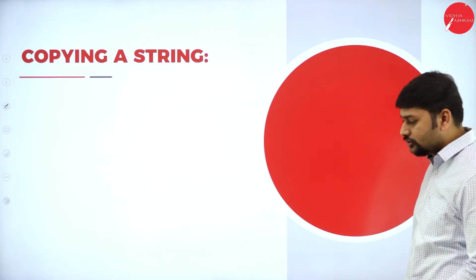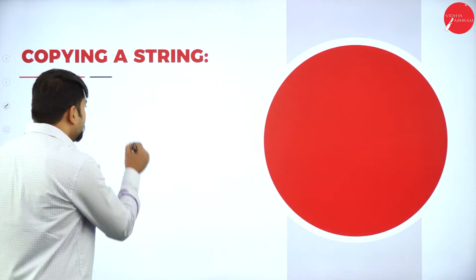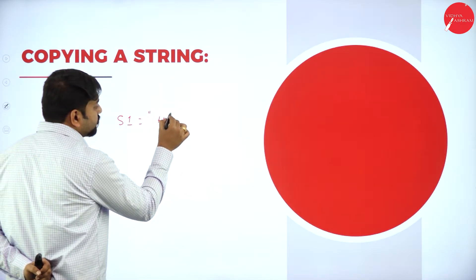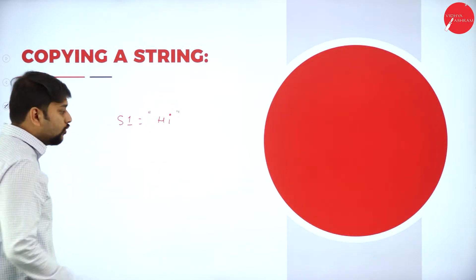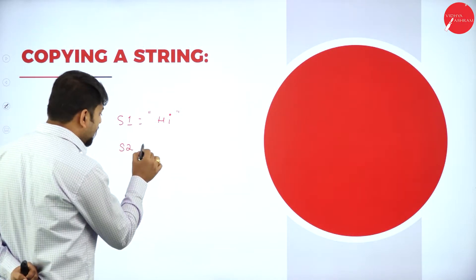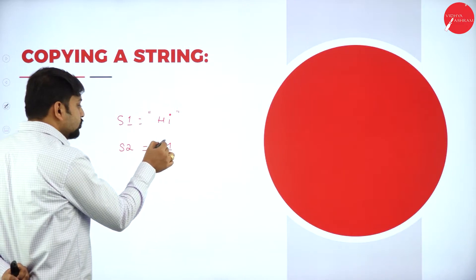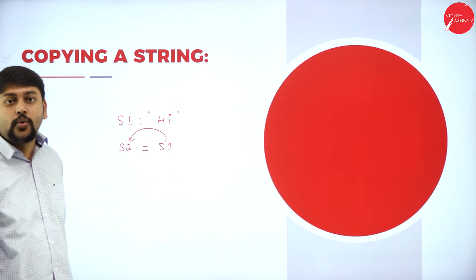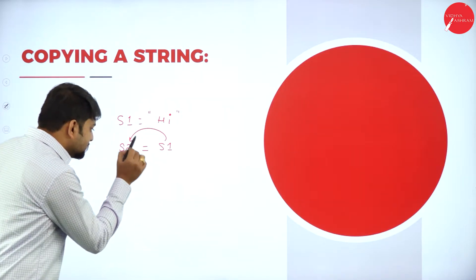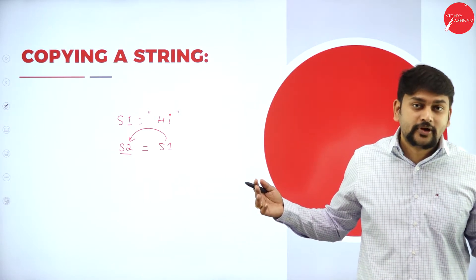Copying a string — it's very simple. Imagine I have s1 equal to 'hi'. I have created one more variable s2. To copy, I would just write s2 is equal to s1, so whatever content I have in s1 will copy to s2. Make sure s2 is of the same type as s1.